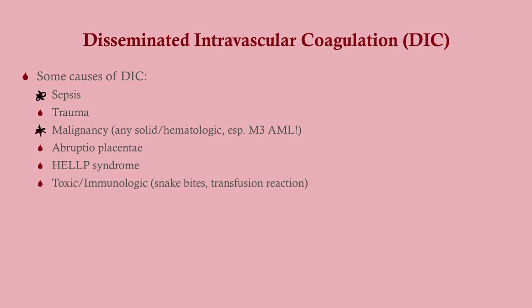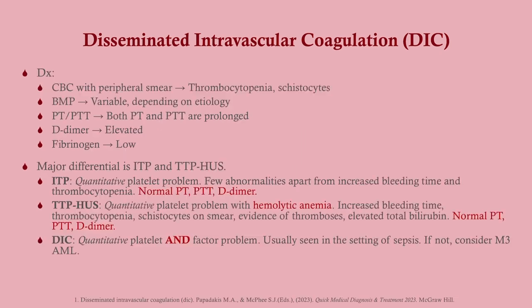Common causes of DIC include sepsis, which is a big one, and malignancy — particularly acute promyelocytic leukemia (APL/M3 AML), which is the most commonly tested malignancy-related cause. There are also some obstetric causes. Snake bites are a cause but less likely to be tested.